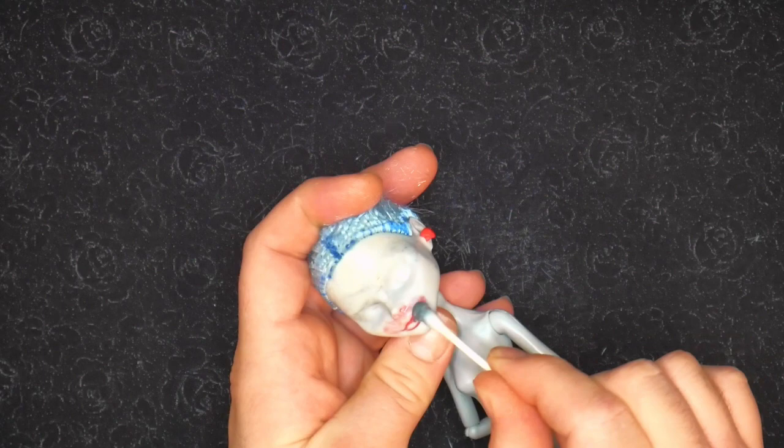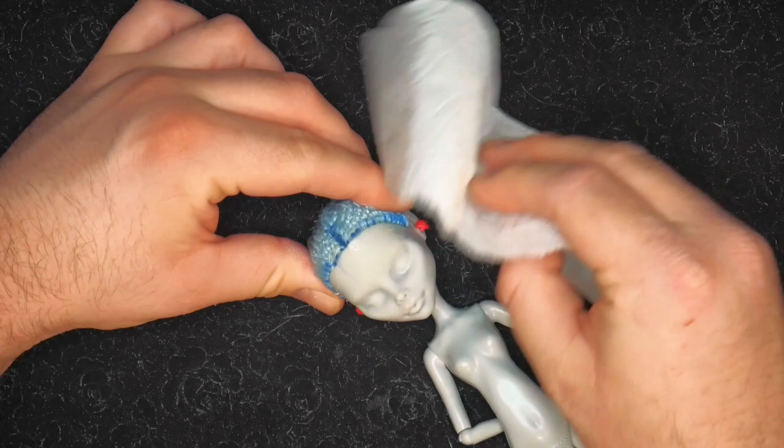Now the ugly makeup stage. Smear her lips all over her face. Once the majority is gone, take a napkin soaked in acetone and wipe off the remaining paint.